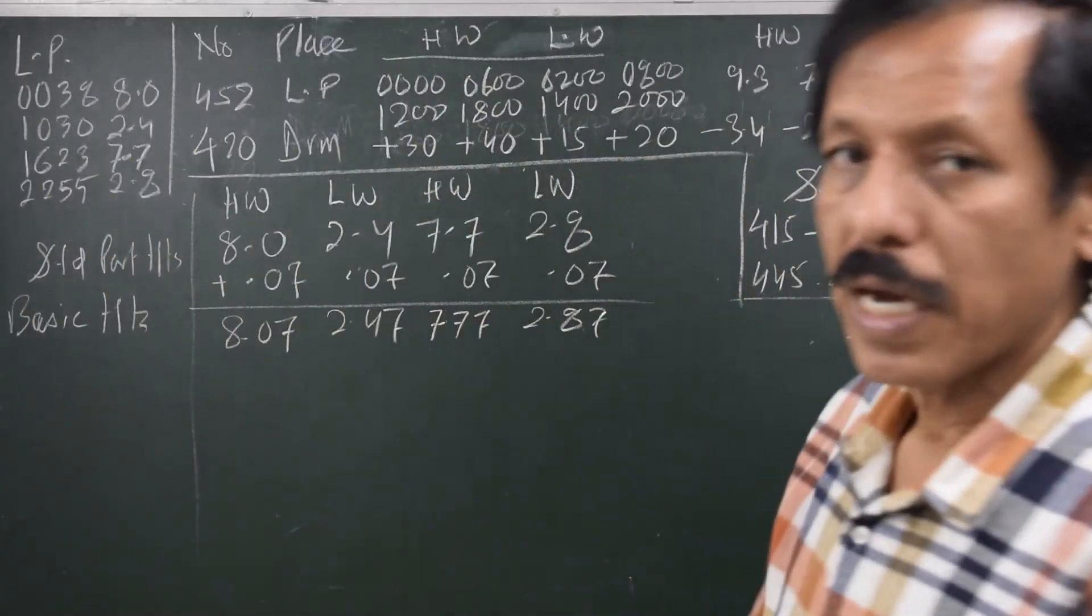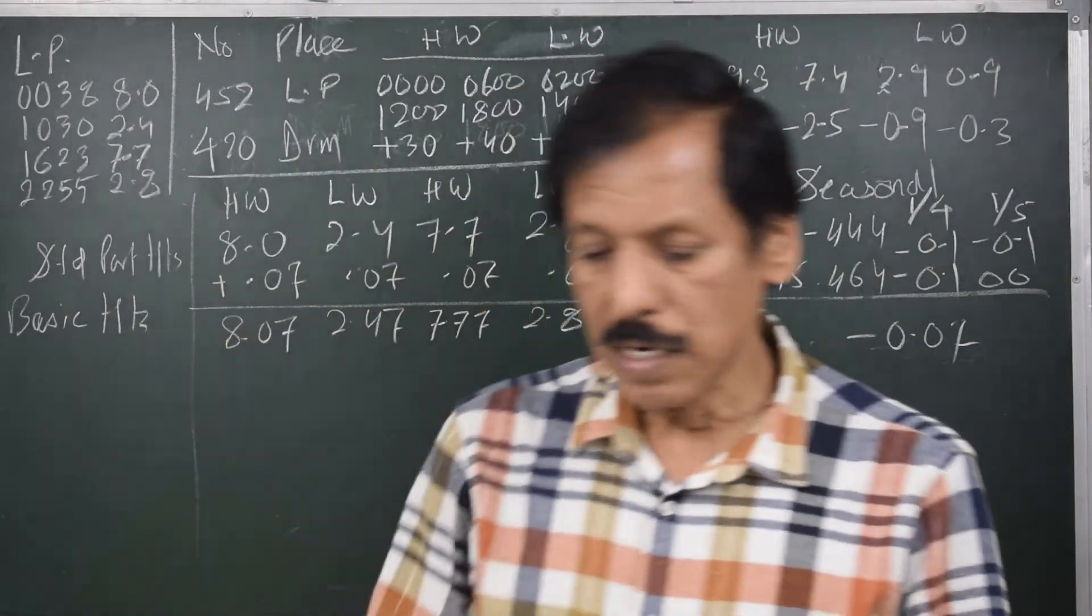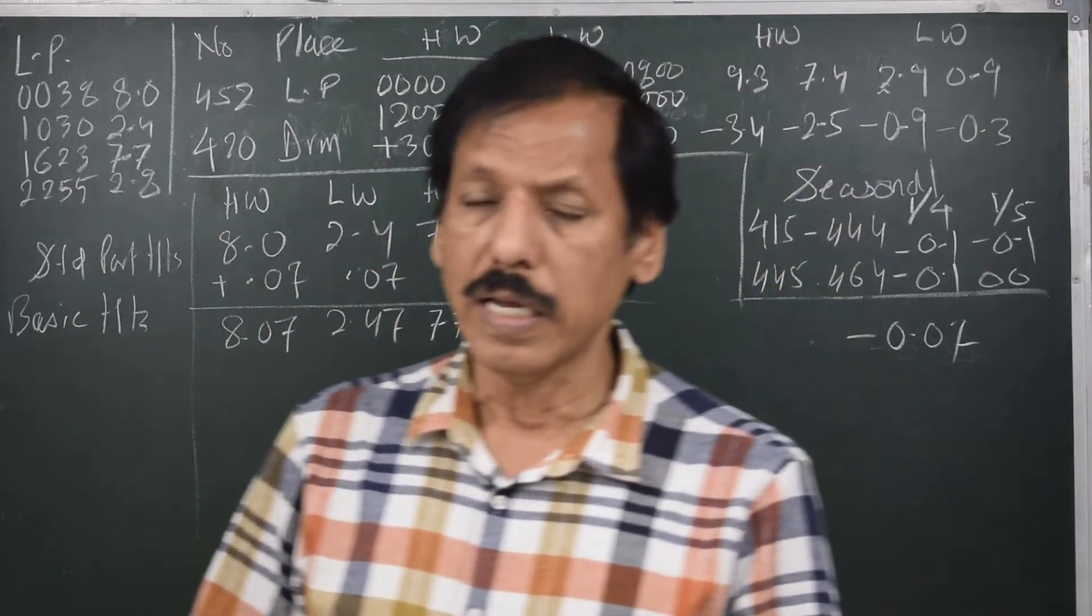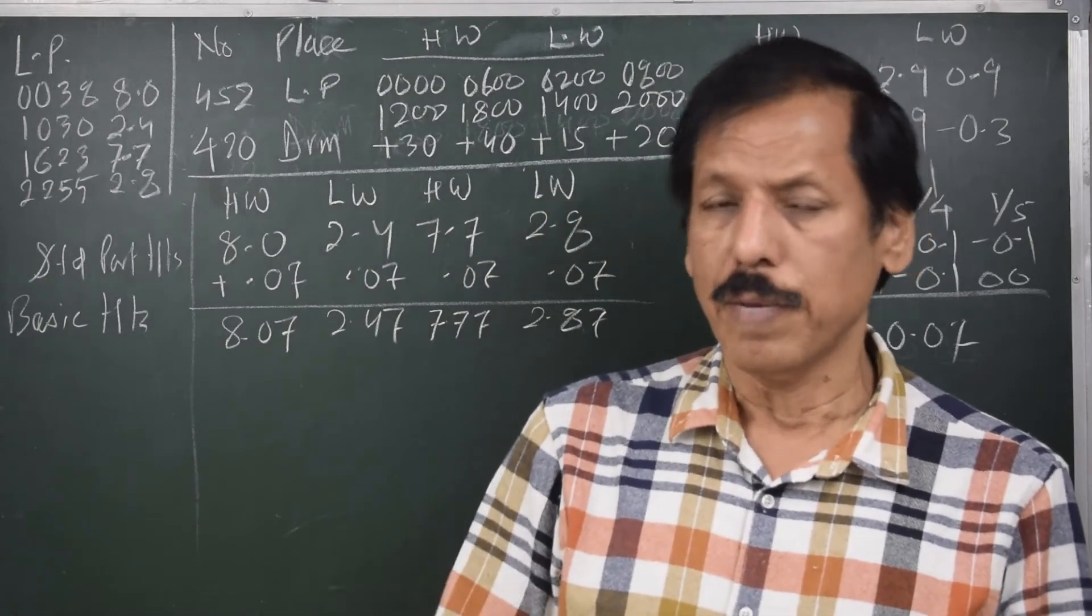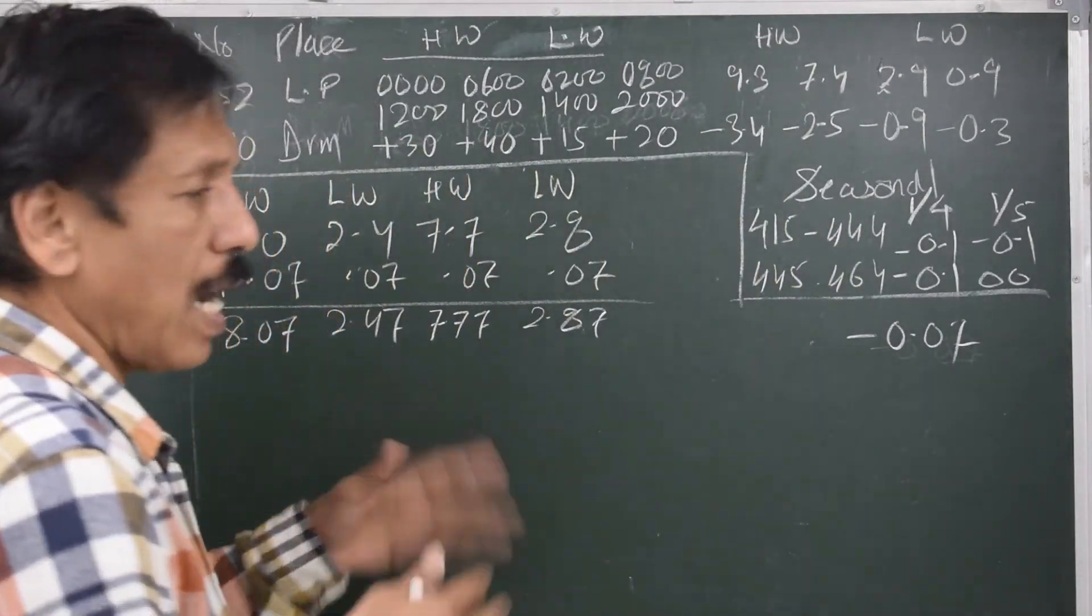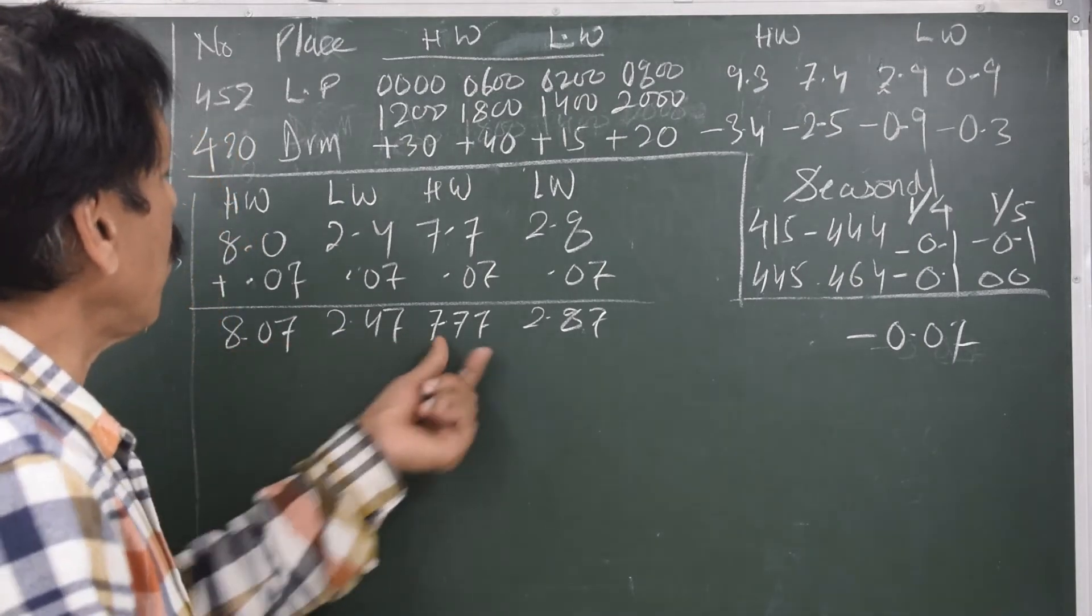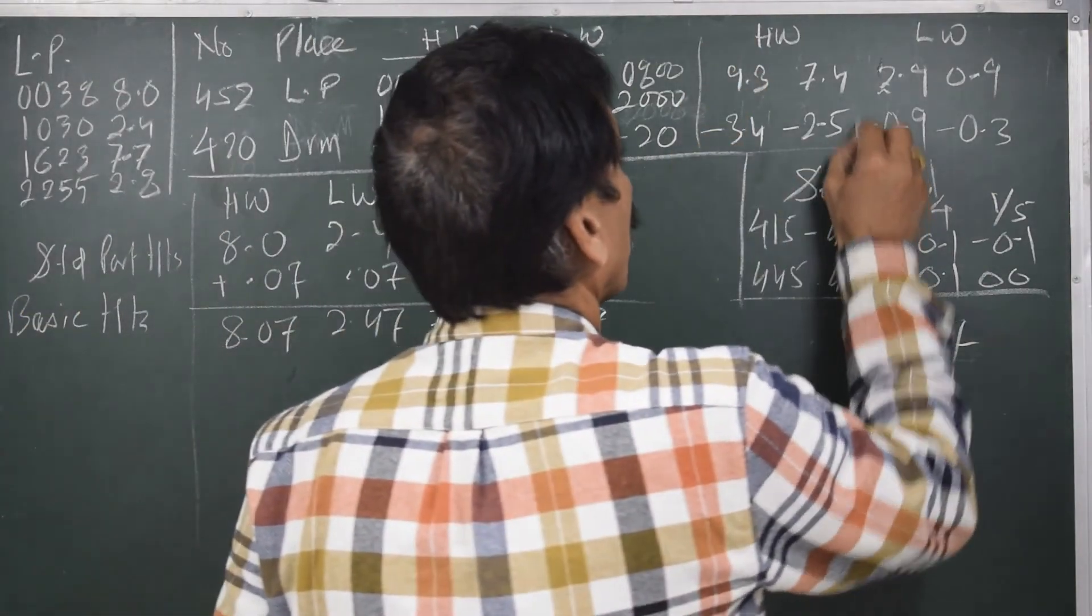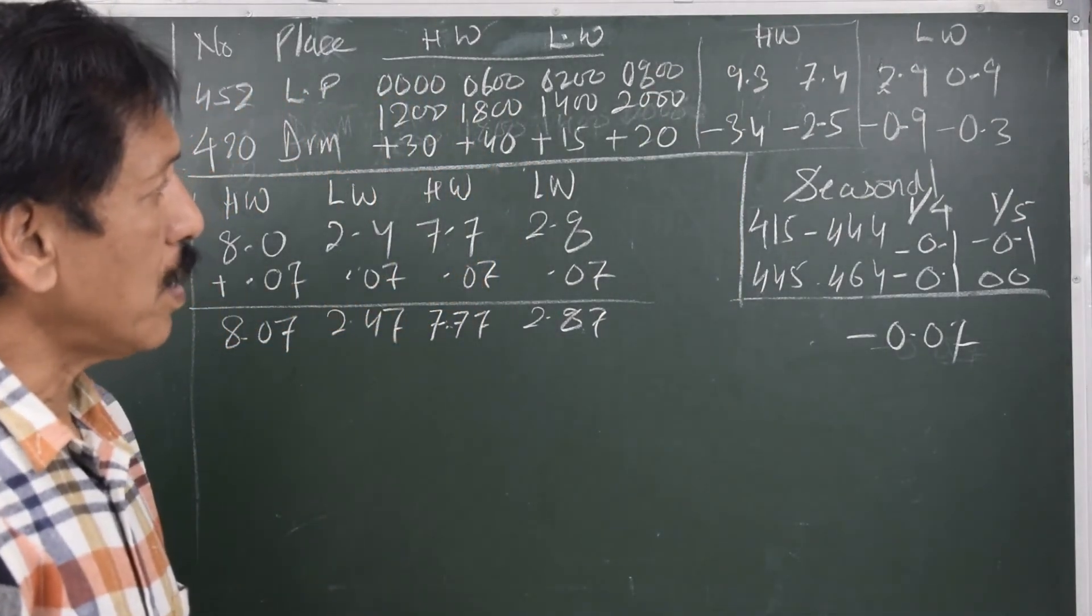Now to this basic height I am going to apply now the height difference for the secondary port. And I have told you in my last lecture that height difference is the only place, height difference for the secondary port is the only area where the extrapolation is allowed. Otherwise in tide calculation, what we are doing by admiralty method, nowhere is the extrapolation permitted. So we are free to do extrapolation. Now if I have to correct the high water which is 8.07 and 7.77, I need to look at this particular window, and I will also do the exercise of interpolating. Let us see how the interpolation can be made easy.